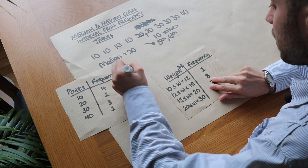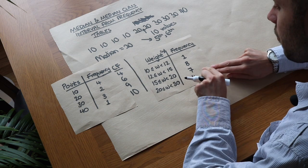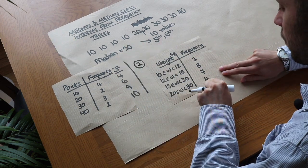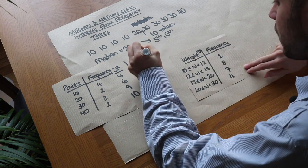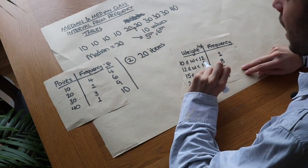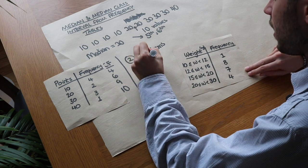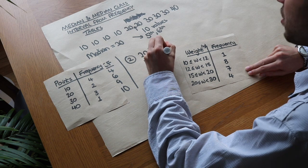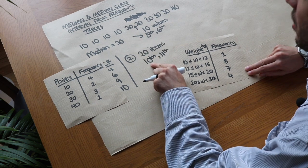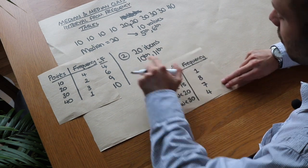Now let's do it with a grouped frequency table. The total frequency is 1 + 8 + 7 + 4 = 20, so we've got 20 values. The median item is halfway between the tenth and eleventh value — we just halve 20 to get the position of the median, then use one after that as well. Let's focus on the tenth value.